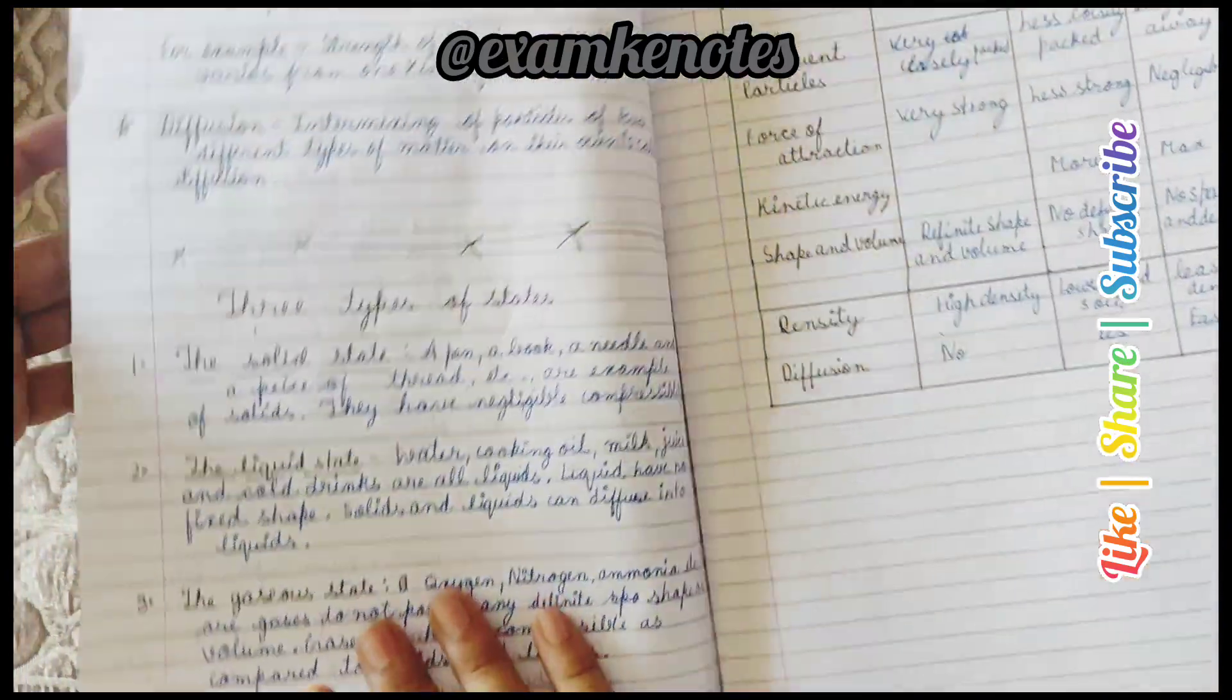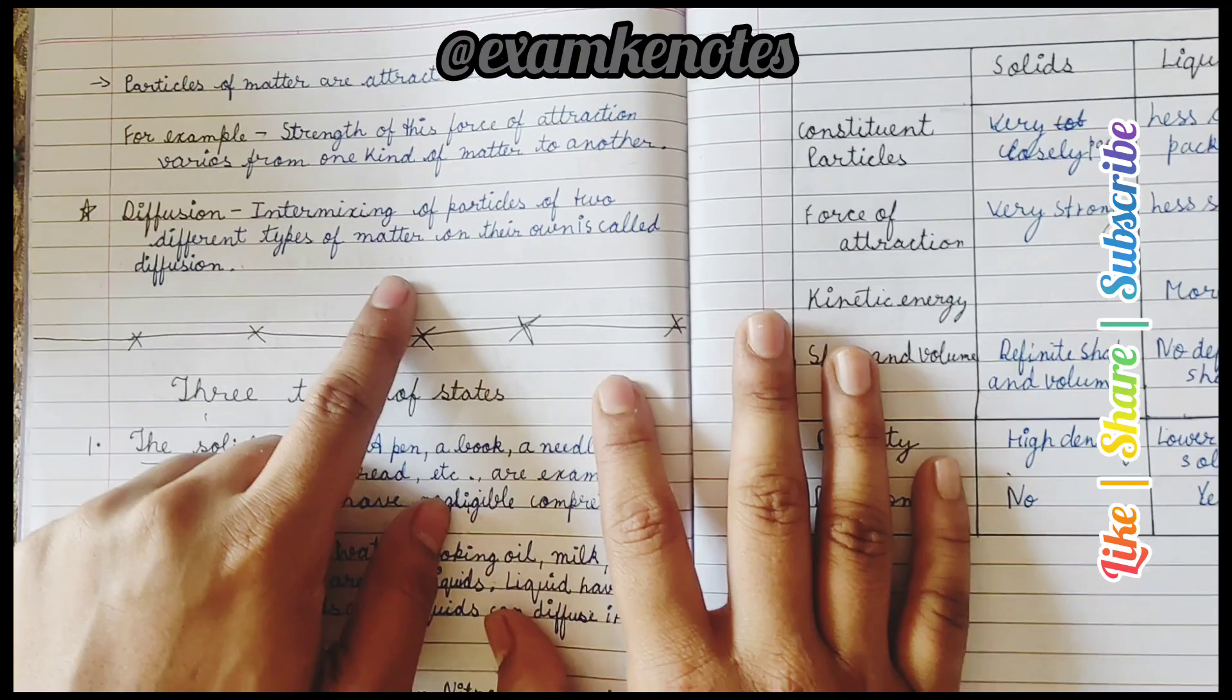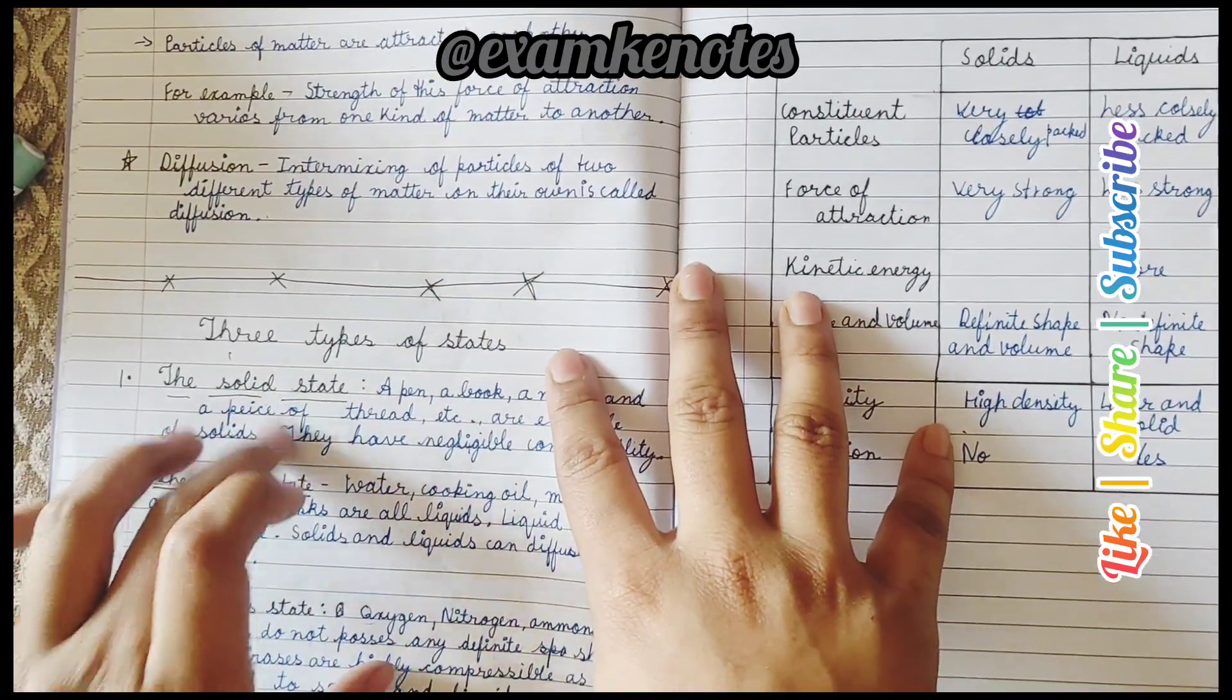Then we come to the example of diffusion. Diffusion means the intermixing of the particles of two different matters. There are three types of states: solid, liquid, and gaseous states.